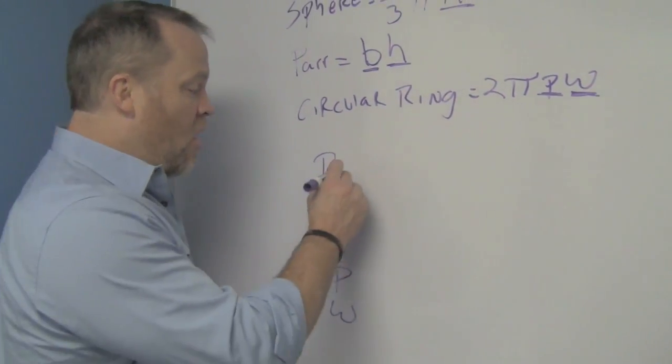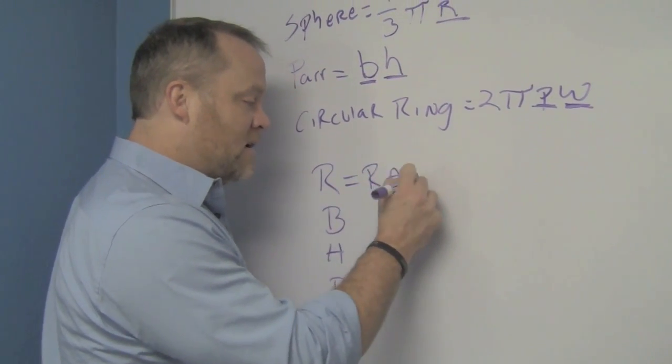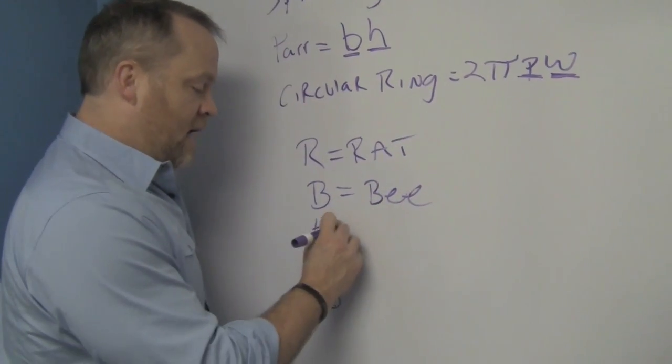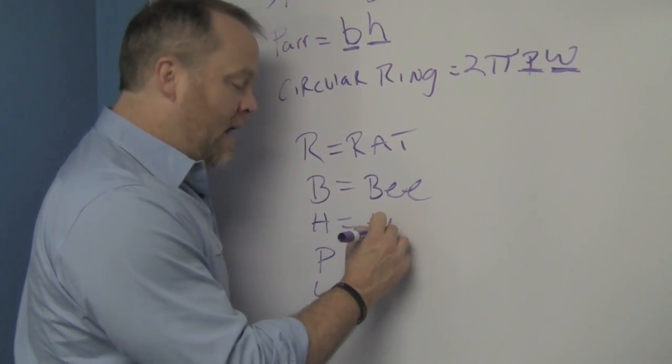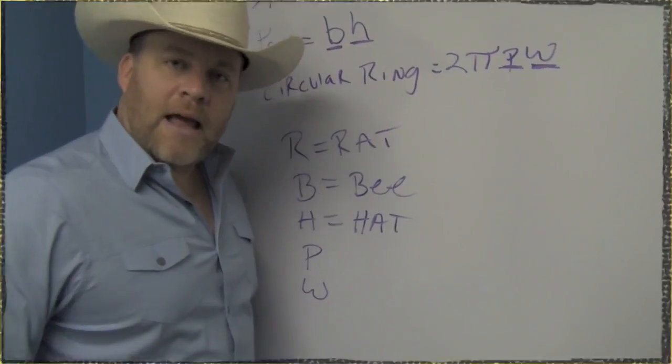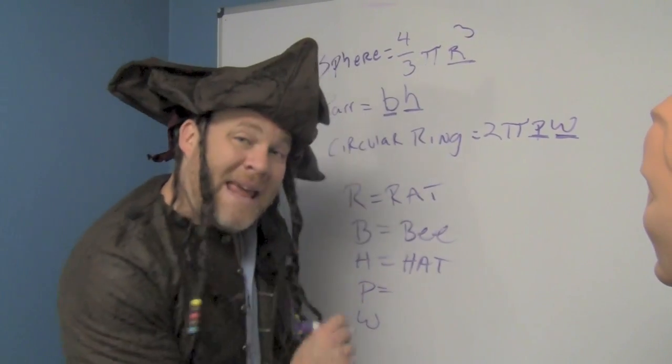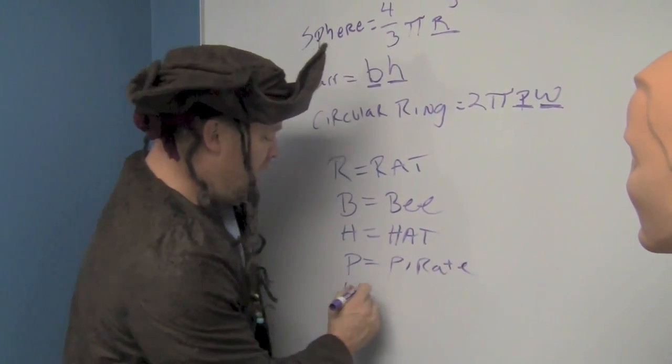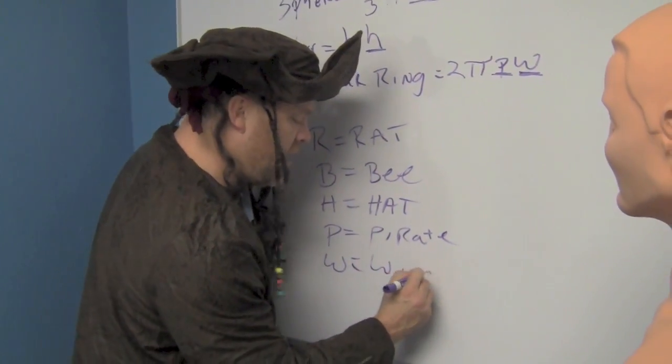For example, every R I'm going to say is going to be a rat. Every B is going to be a bee, like a bumblebee. Every H is going to be a hat, like a cowboy hat. Every P is a pirate, and every W is a window.